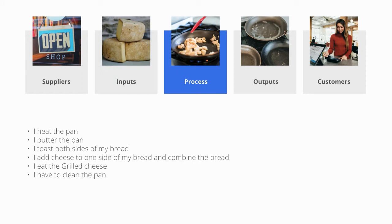Next up, Process. The process is the method of creating your desired outputs. This is a step-by-step list of everything you're doing to develop outputs. In this example: I heat the pan, I butter the pan, I toast both sides of my bread, I add cheese to one side of my bread, I combine the bread, I eat the grilled cheese, and I have to clean the pan.